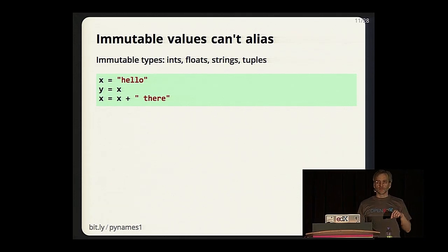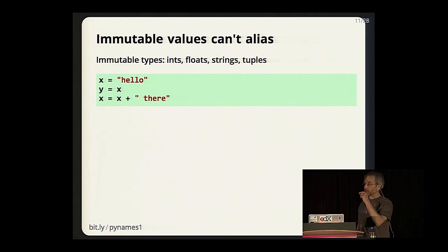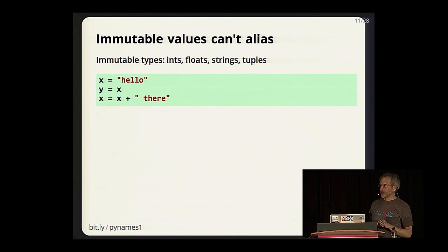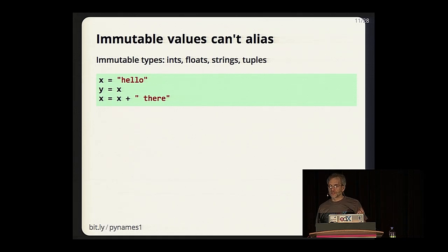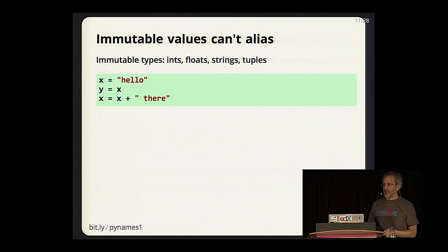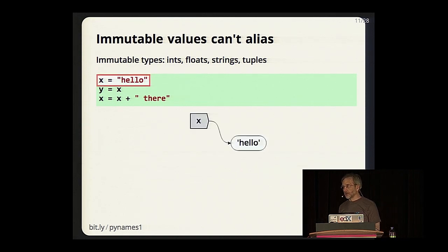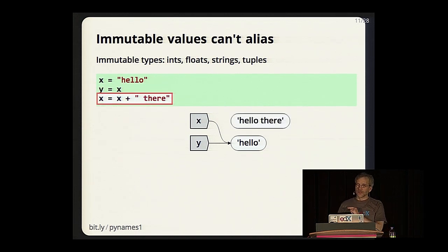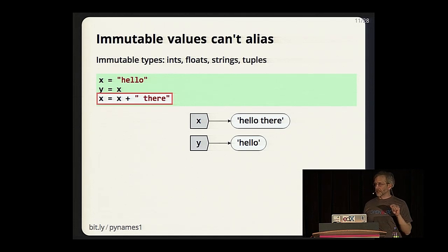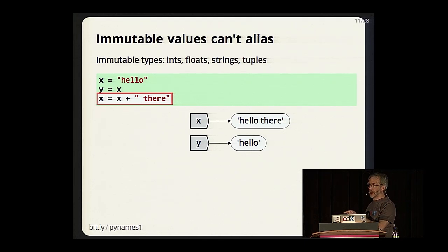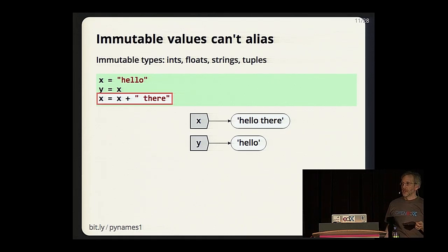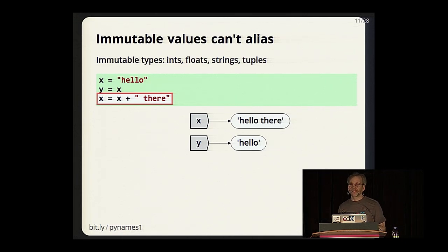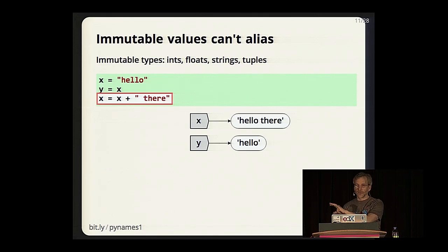There are also immutable values—values that cannot be changed in place. Python types like numbers, ints, floats, strings, and tuples have no methods that let you change their value. So when we say `x = 'hello'` and `y = x`, then `x = x + ' there'`, what we're really doing is building an entirely new string 'hello there' and making x refer to it. As a result, y is still 'hello'—there is no way to change the value in place, so you don't get mutable aliasing here. This is one of the reasons people really like immutable values.